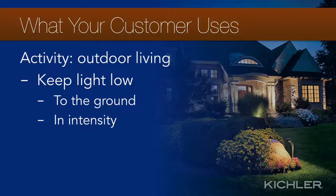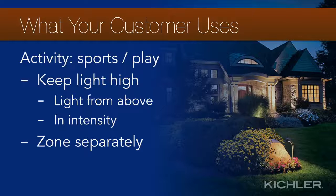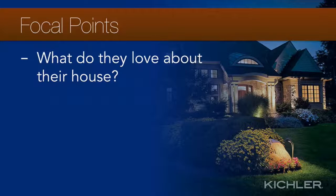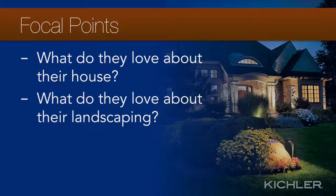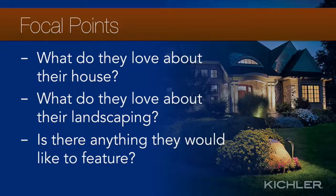For lighting outdoor living areas: keep lighting low — you don't want to blind folks sitting outside or disturb the naturally flattering effects of low light. Keep lights pointed down and illuminating the edges of the outdoor living area. For active areas like putting greens or basketball courts, activities requiring more intense illumination are best lit from above. Consider placing these lights in their own zone so they can be turned off when not in use. Ask about their favorite parts of the house — identifying what they love, and what they don't care for, helps you decide what to emphasize or avoid.